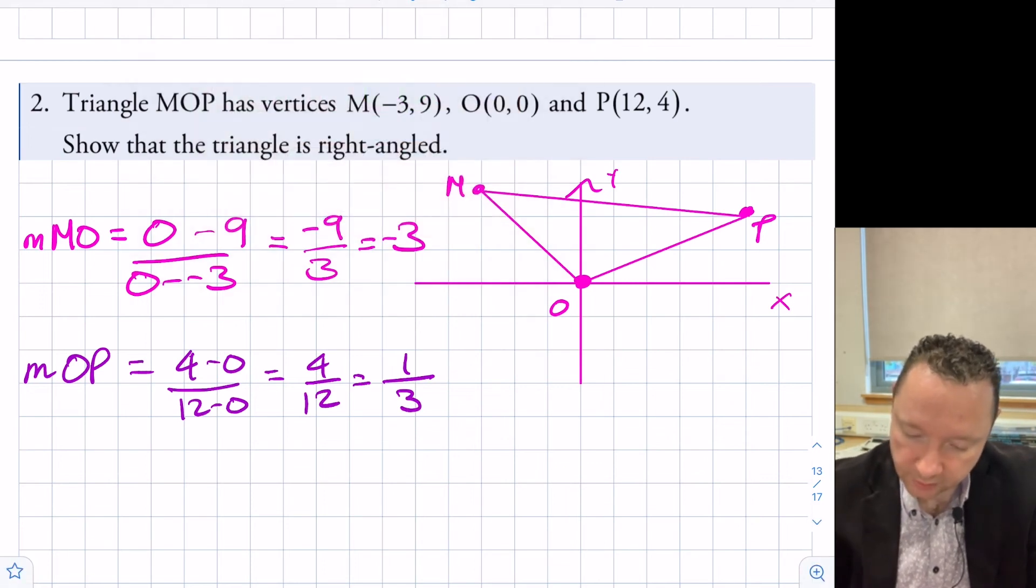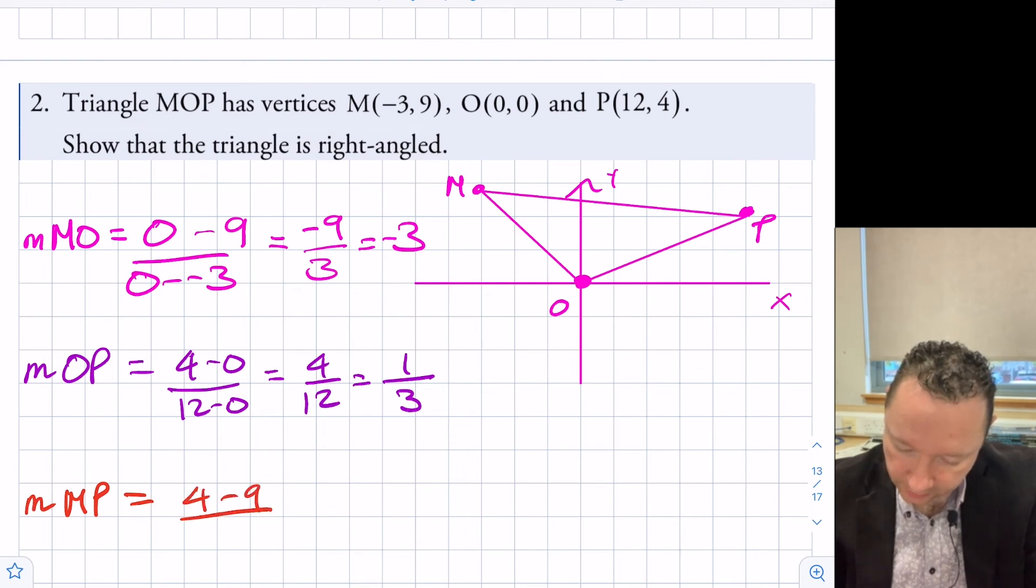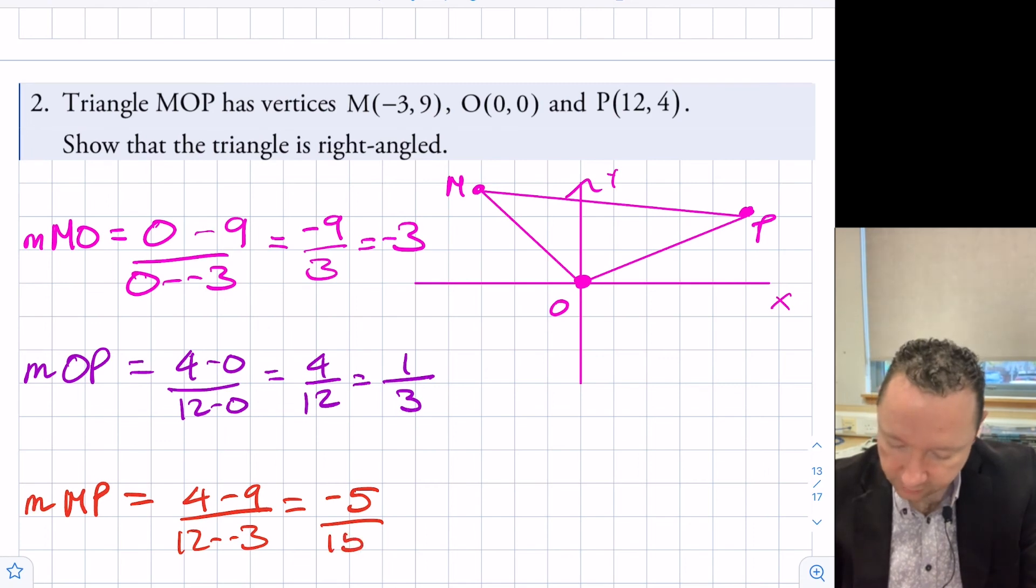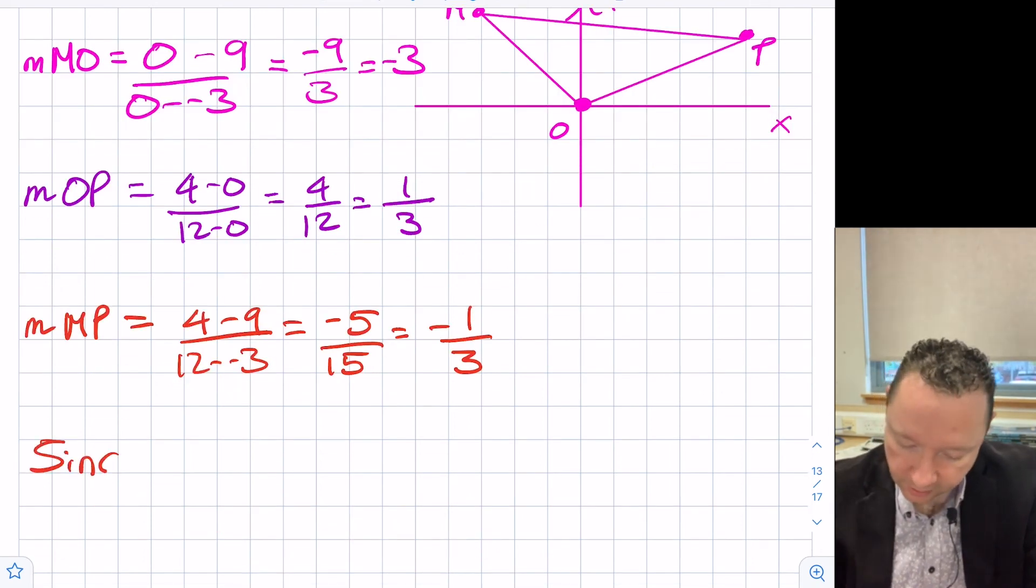And just to be on the safe side, let's check our last gradient. The gradient from M to P, that's going to be 4 minus 9 over 12 minus -3. Four minus nine is -5 over 15. That's minus a third.